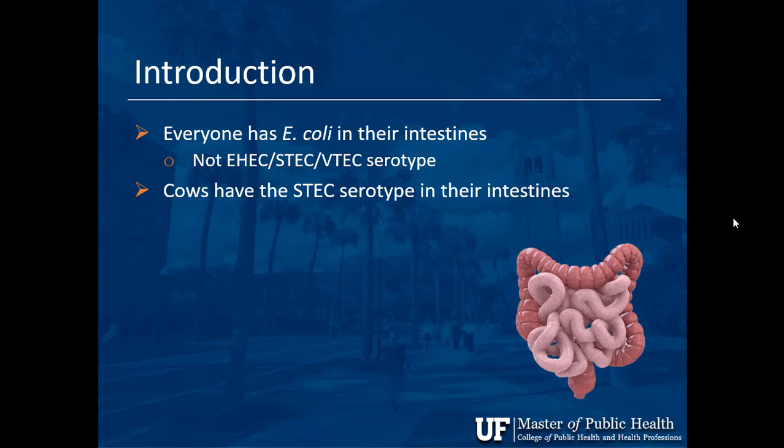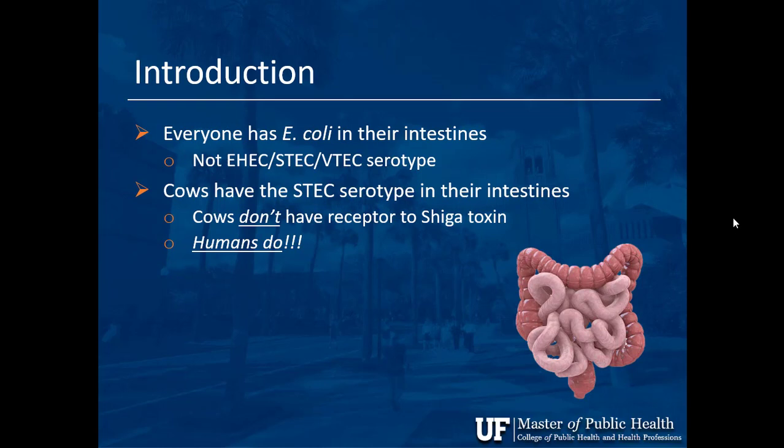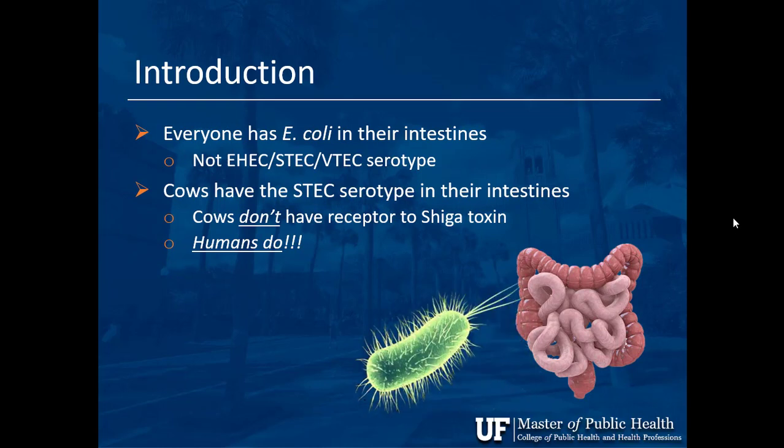Cows do have this Shiga Toxin E. coli in their intestines, so why aren't they getting sick? The answer lies in the receptor. Cows don't have the receptor for the Shiga Toxin, so they can't respond to it. However, humans do have the receptor, so they respond to it.